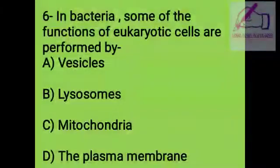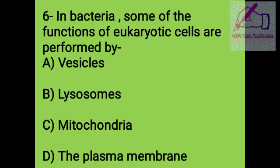Question number 6: In bacteria, some of the functions of eukaryotic cells are performed by: A. Vesicles, B. Lysosome, C. Mitochondria, D. Plasma membrane. The right answer is D, the plasma membrane.